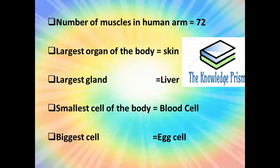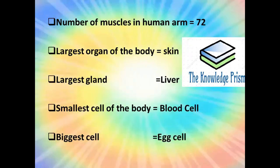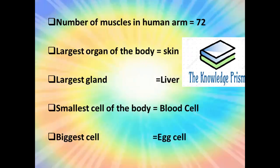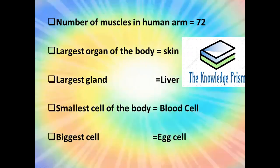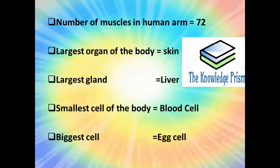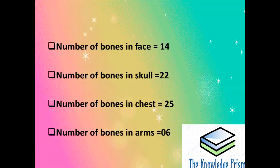Largest organ of the body is skin. Largest gland is liver. Smallest cell of the body is blood cell. Biggest cell of the human body is egg cell. Number of bones in face are 14. Number of bones in skull are 22.